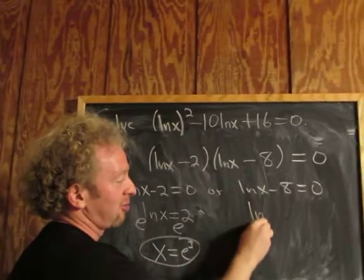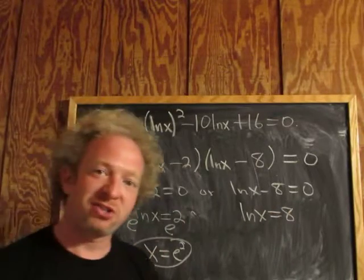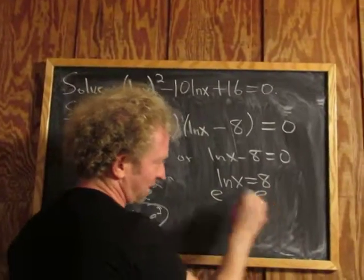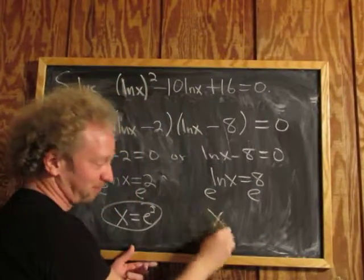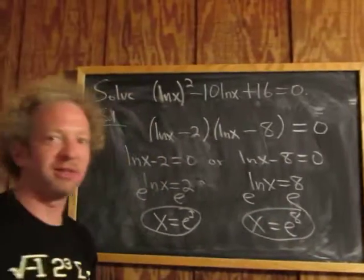Same thing here, add 8 to get ln x = 8. Again, exponentiate both sides: e^(ln x) = e^8. Since e^(ln x) equals x, we get x = e⁸.